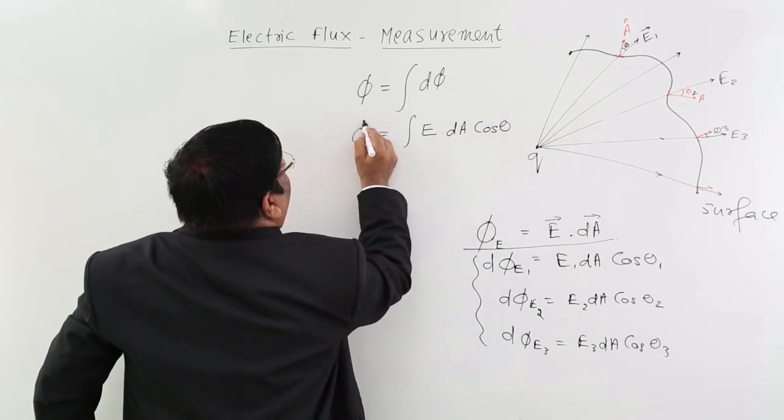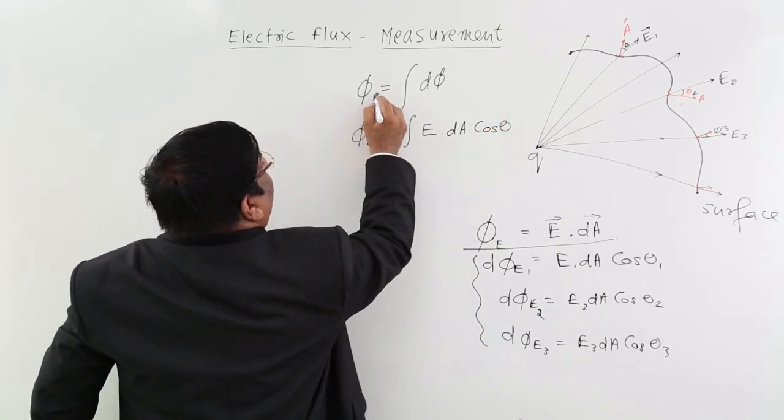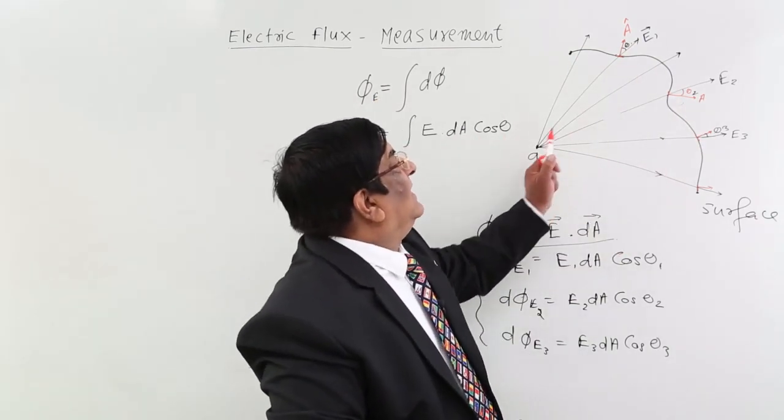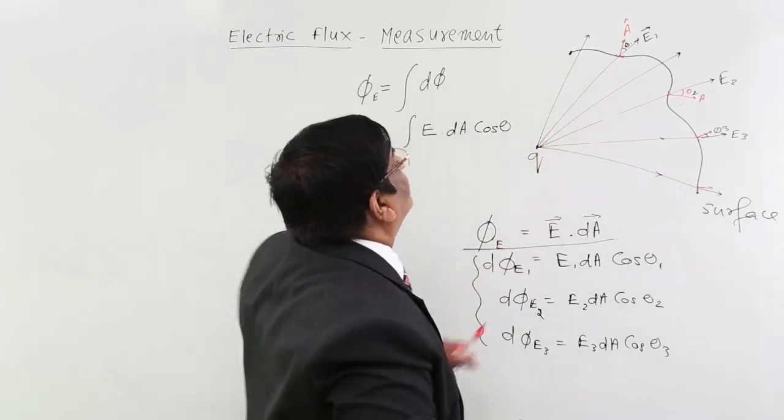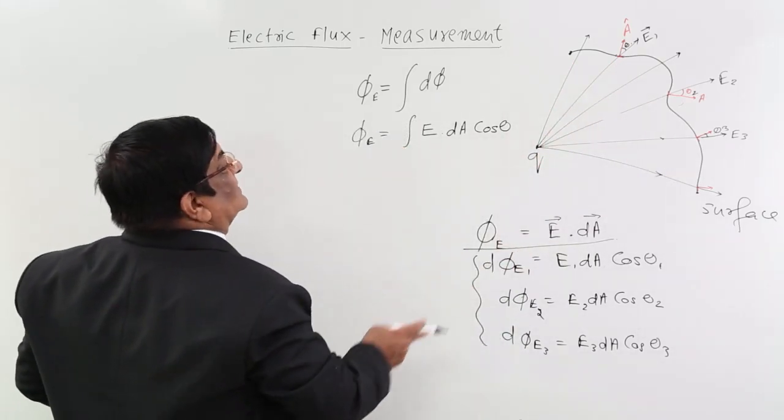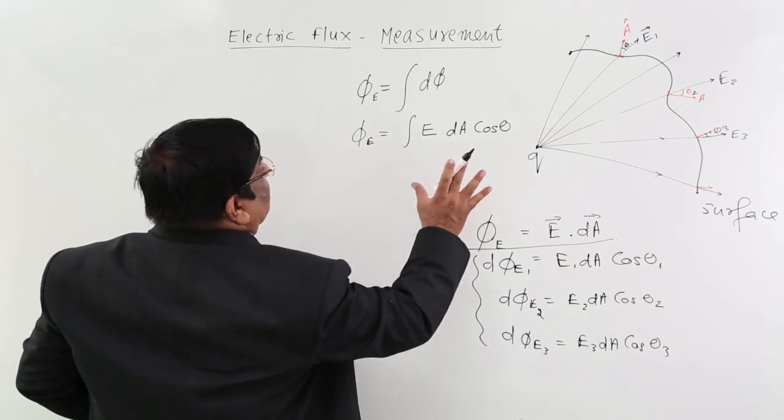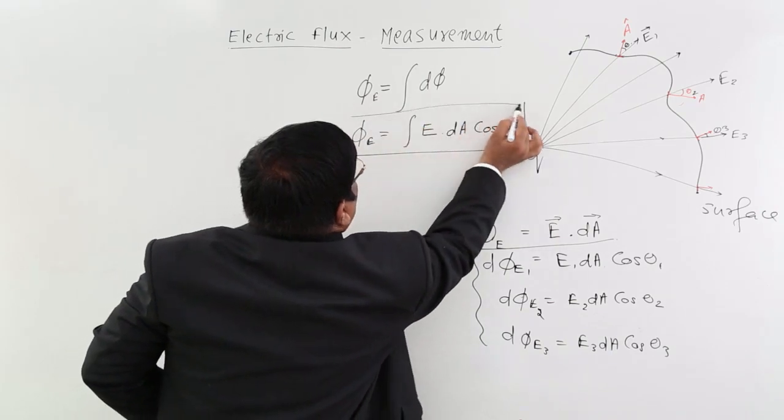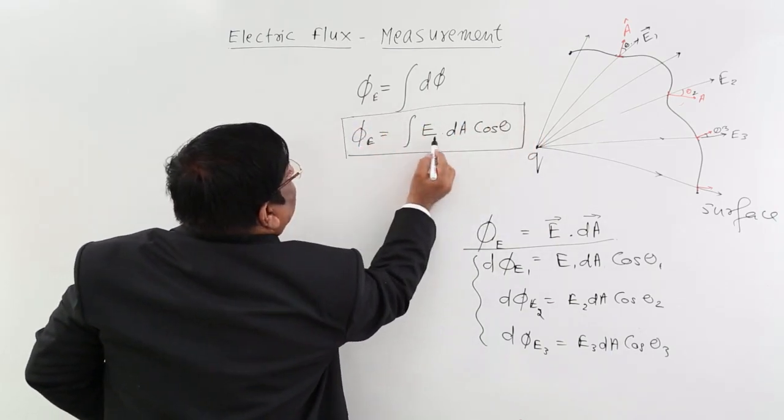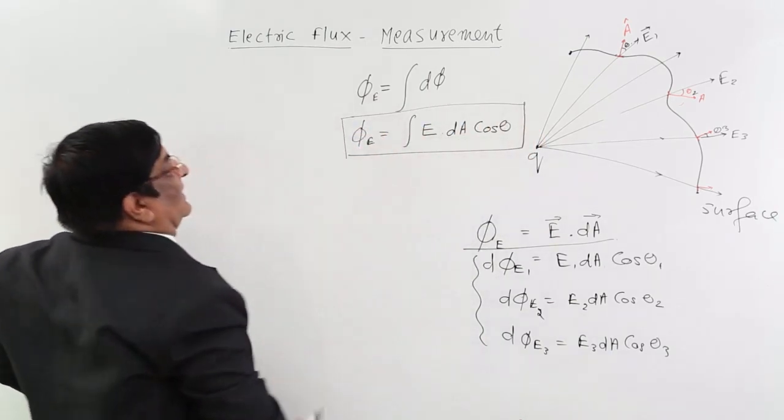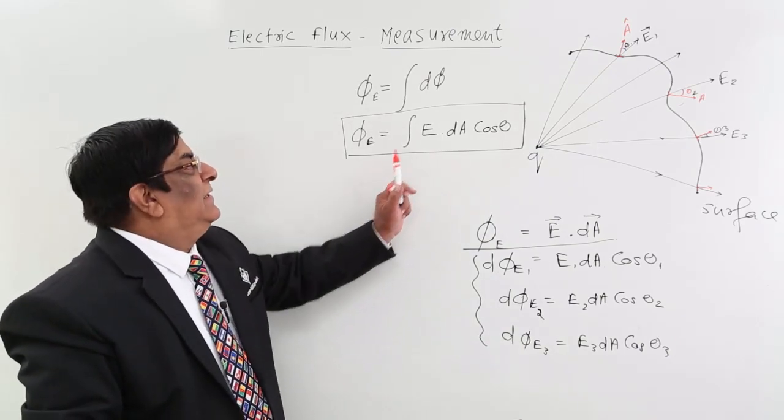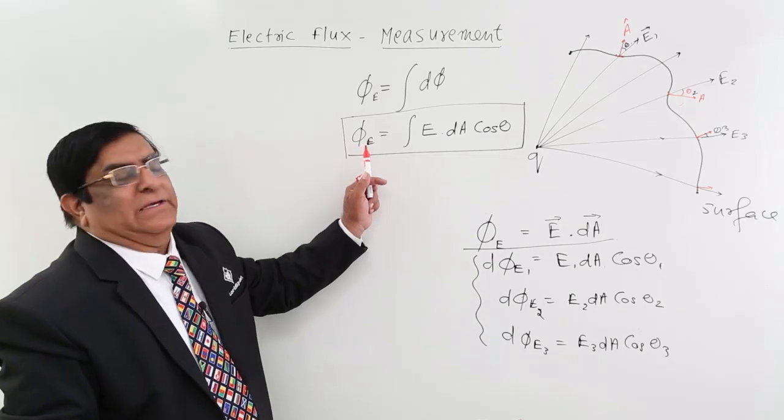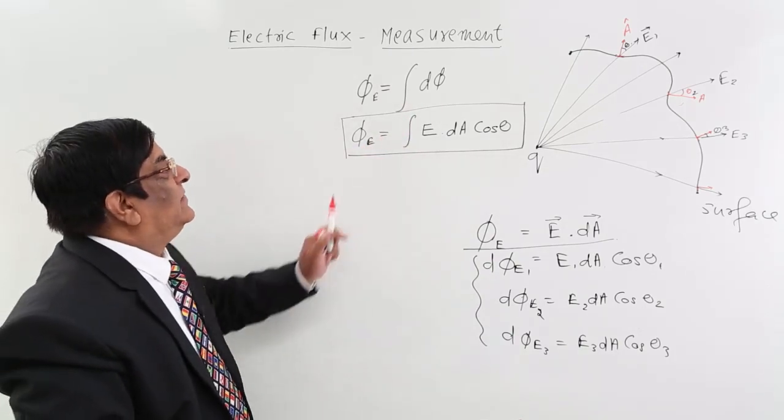So this is how we write electric flux formula for any shape of the area in any electric field. Variable electric field, variable areas, variable theta, everything is variable. Then we have no go, we have no other path than to integrate for each small area. So you will remember this formula, E dA cos theta is equal to phi E, integration of this.